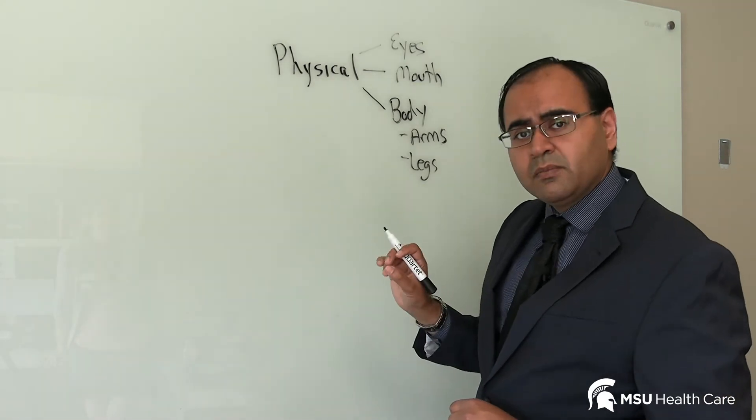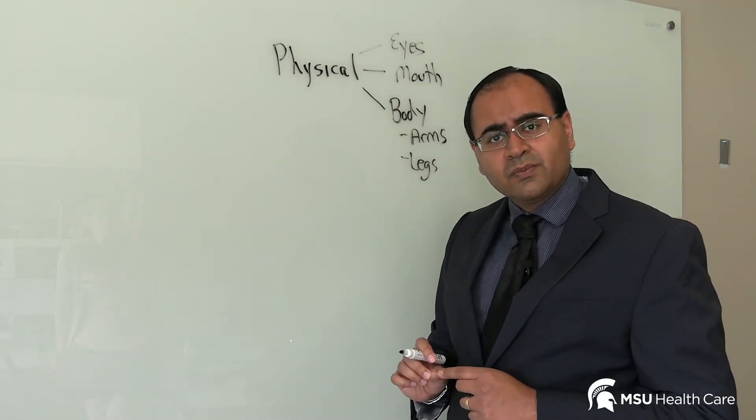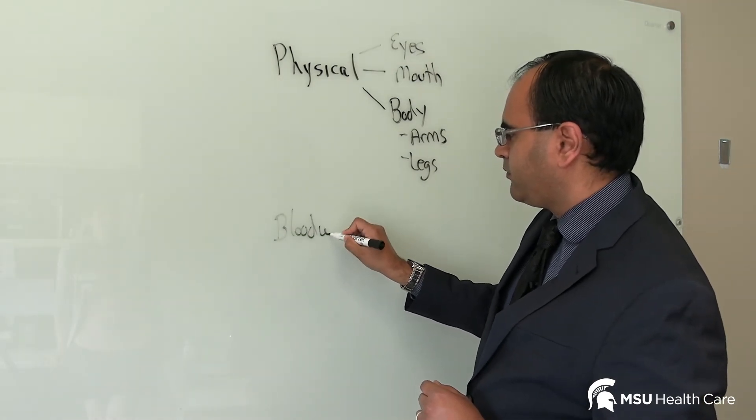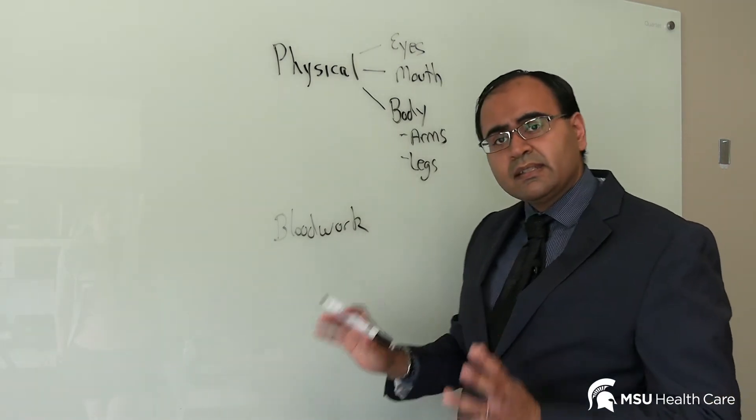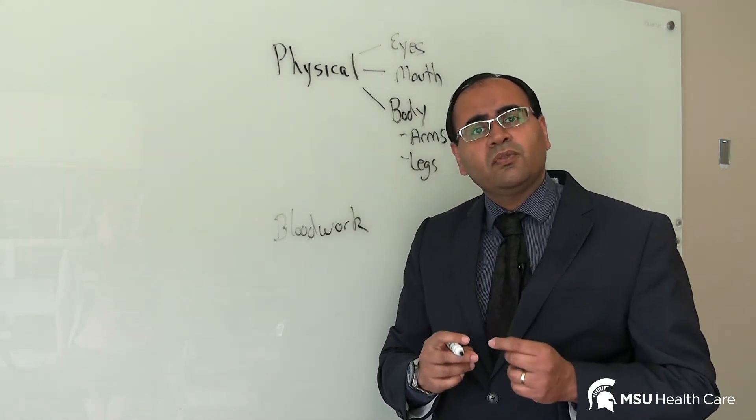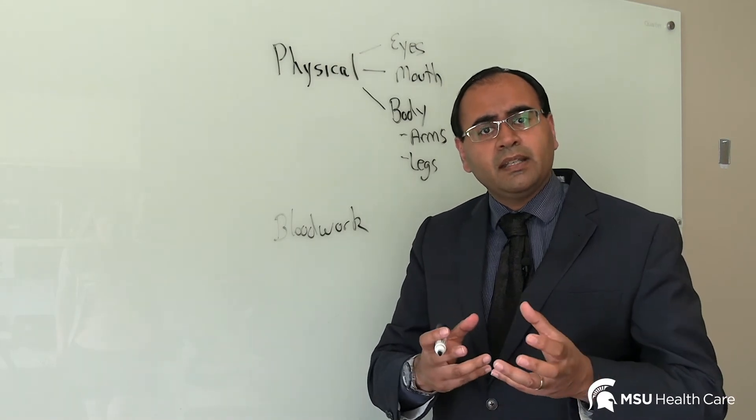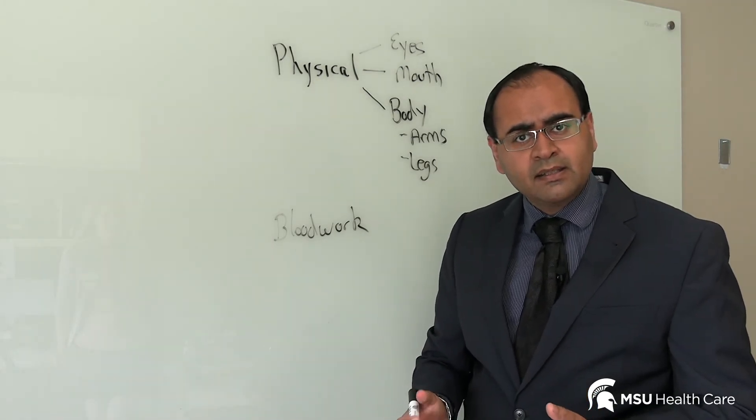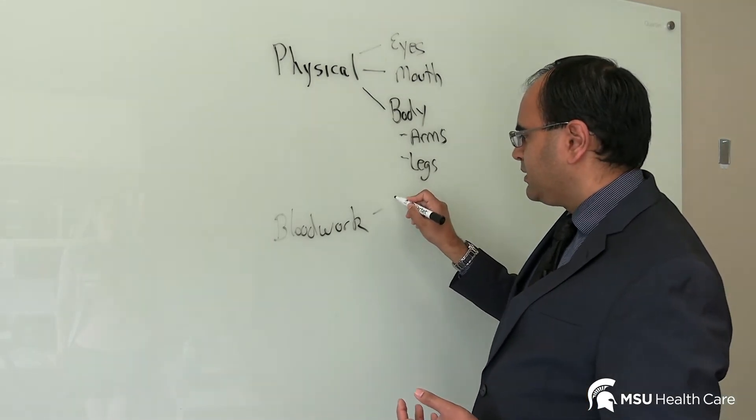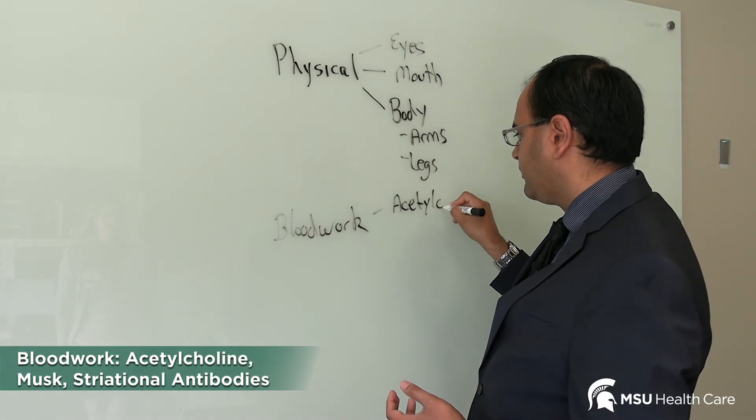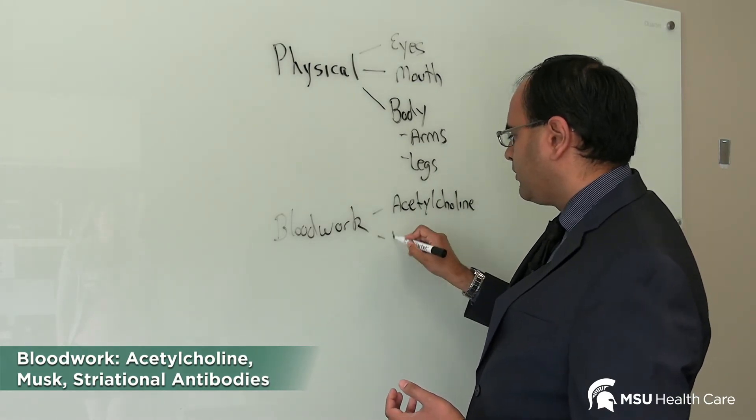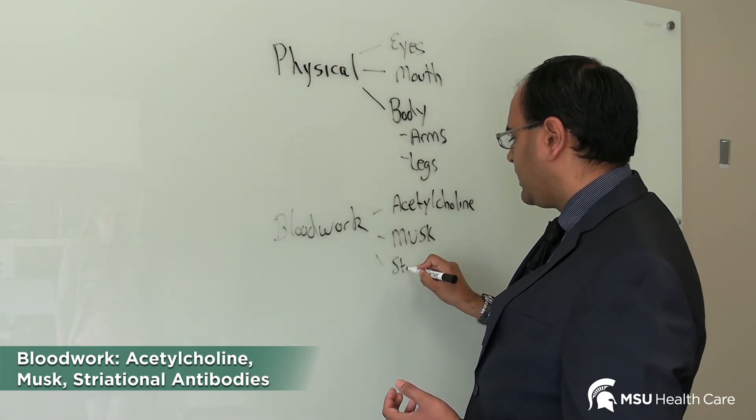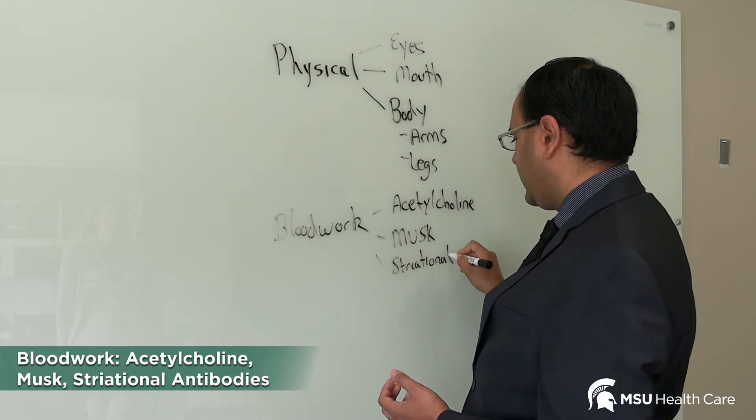The second way that we try to diagnose myasthenia gravis is with blood work. The blood studies for myasthenia focus on the different markers for your body causing inflammation in the muscle. Those markers are your antibodies. They are antibodies to acetylcholine, musk (M-U-S-K), and striational antibodies.